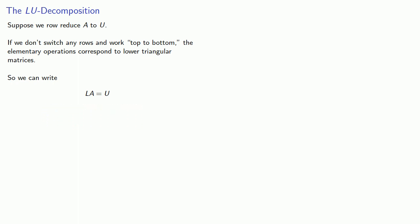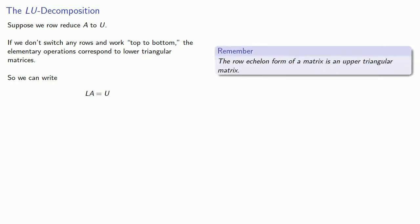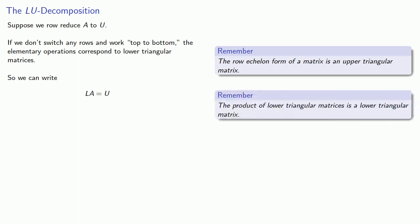Remember the row echelon form of a matrix is an upper triangular matrix. And L will be a product of elementary operations that correspond to lower triangular matrices. Remember the product of lower triangular matrices is also a lower triangular matrix.